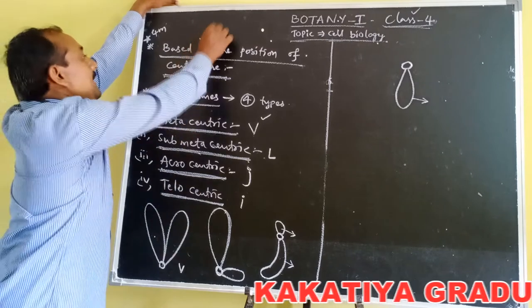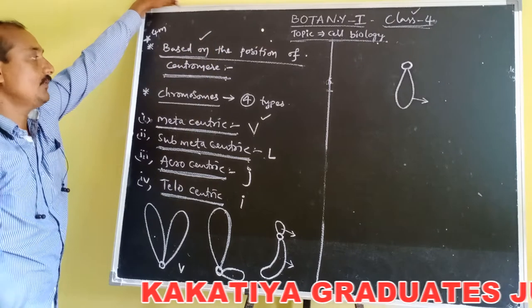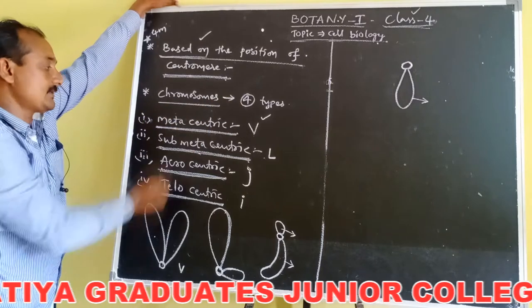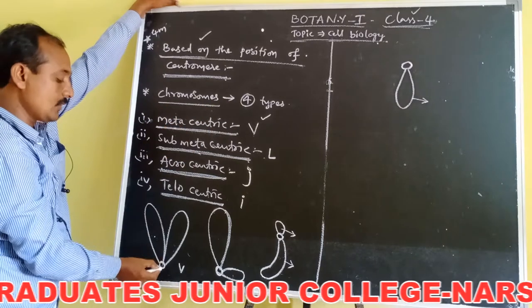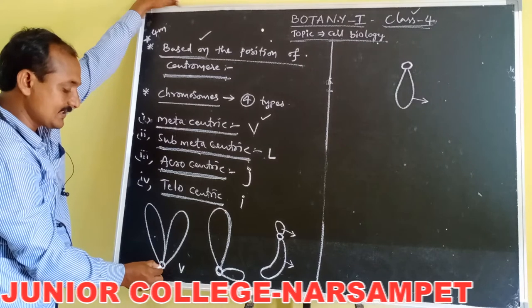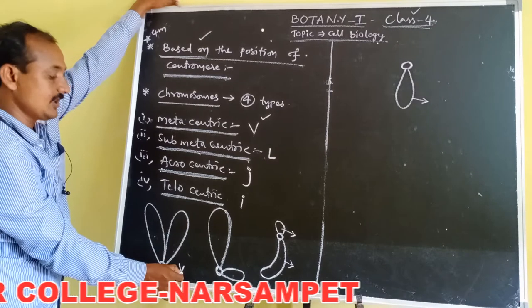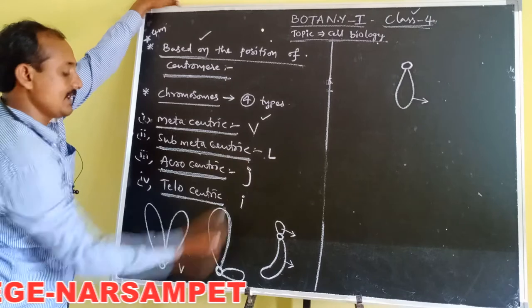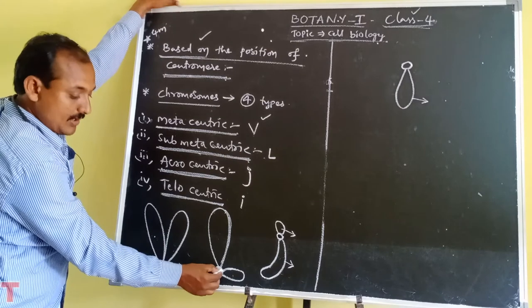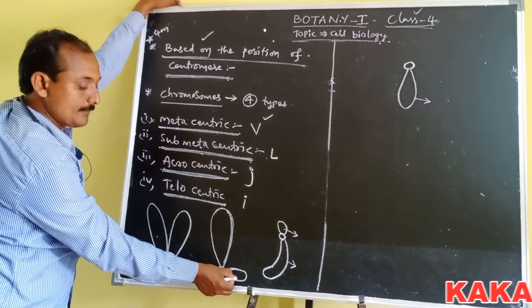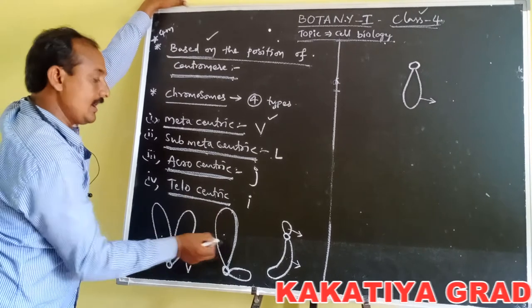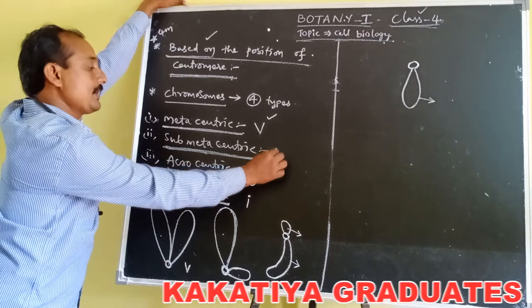Based on the position of the centromere, chromosomes are classified into four types. Metacentric means two equal arms are present, centromere is located at the center, and they appear V-shaped. Submetacentric means it consists of two unequal arms; centromere is nearer to one arm and far away from the other arm.